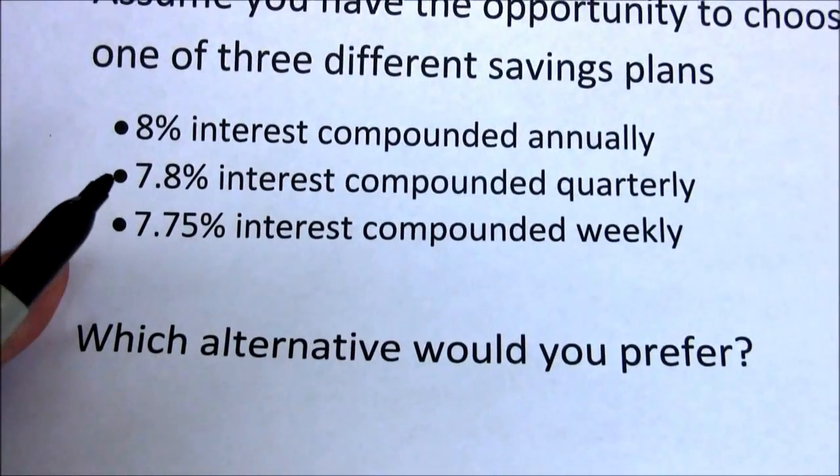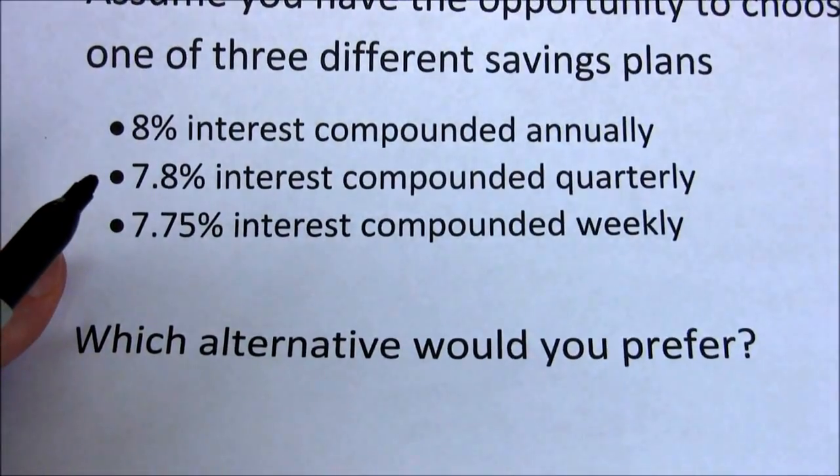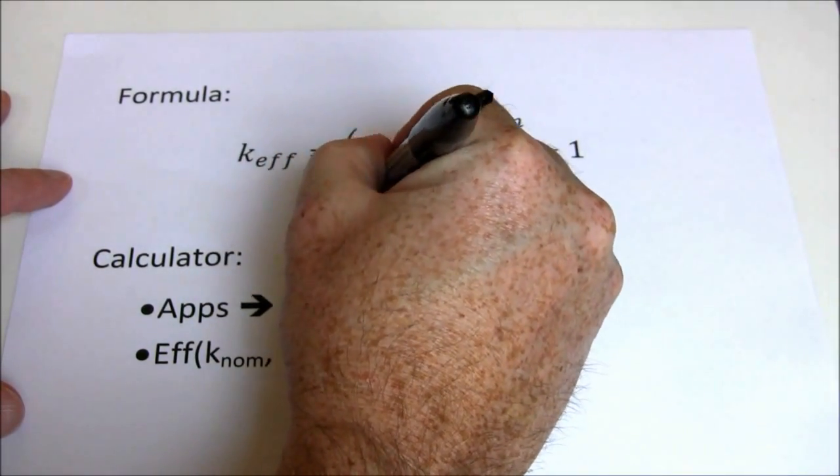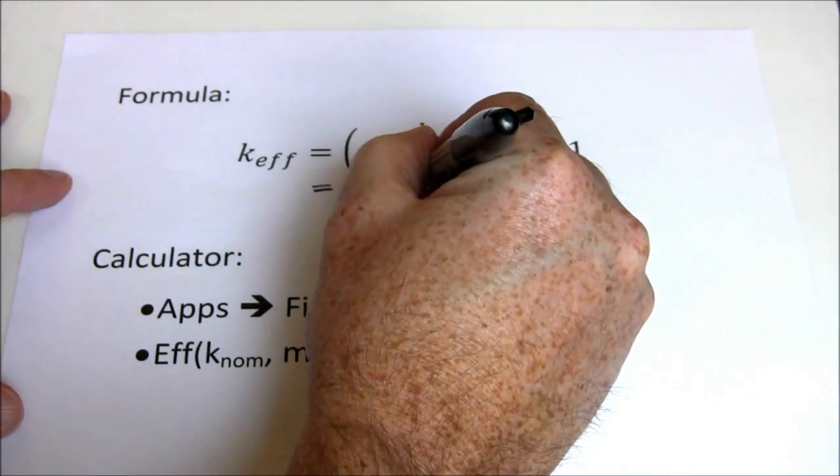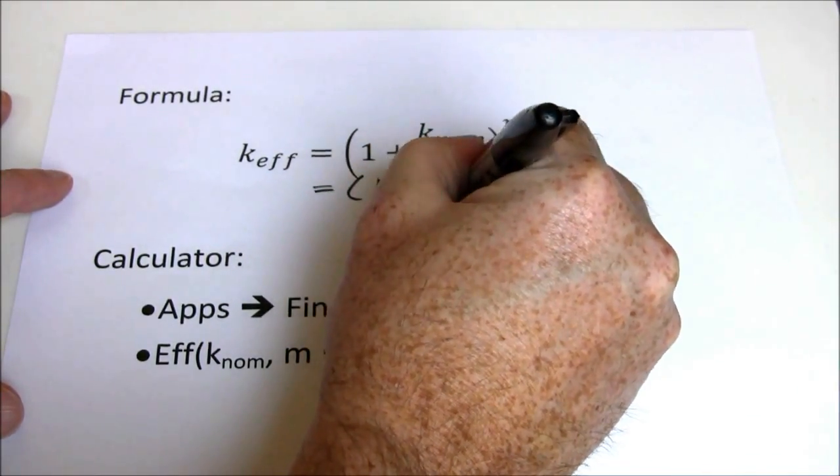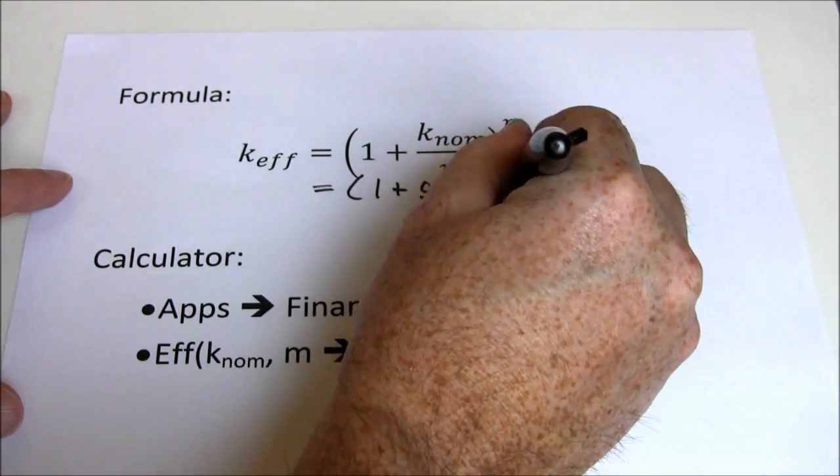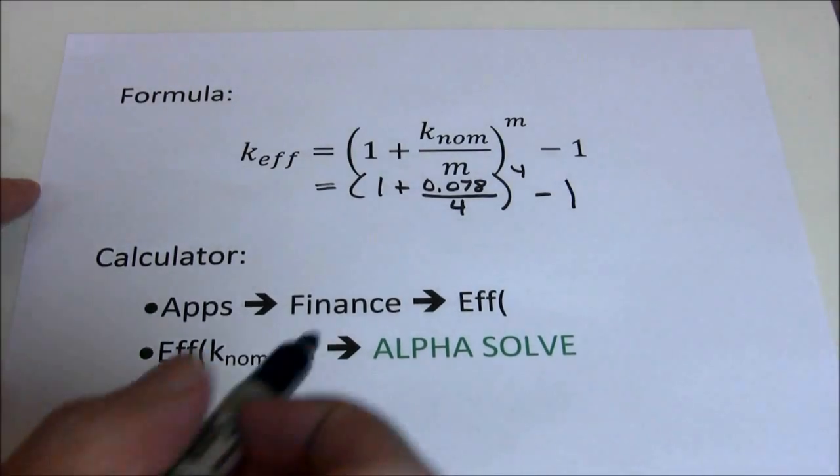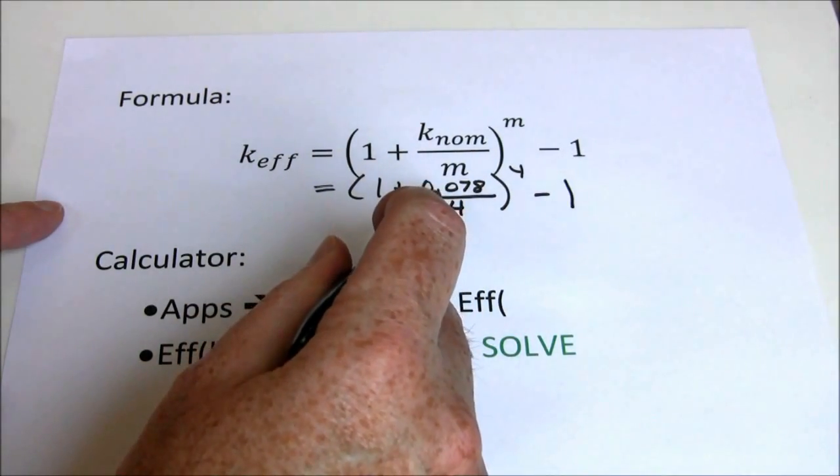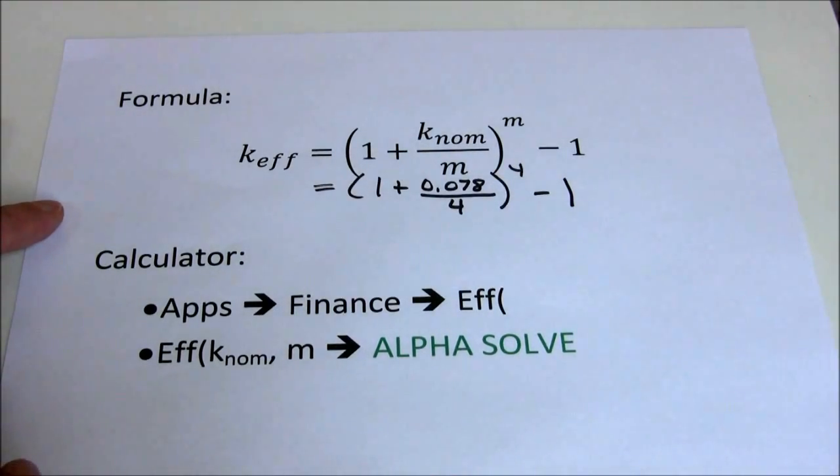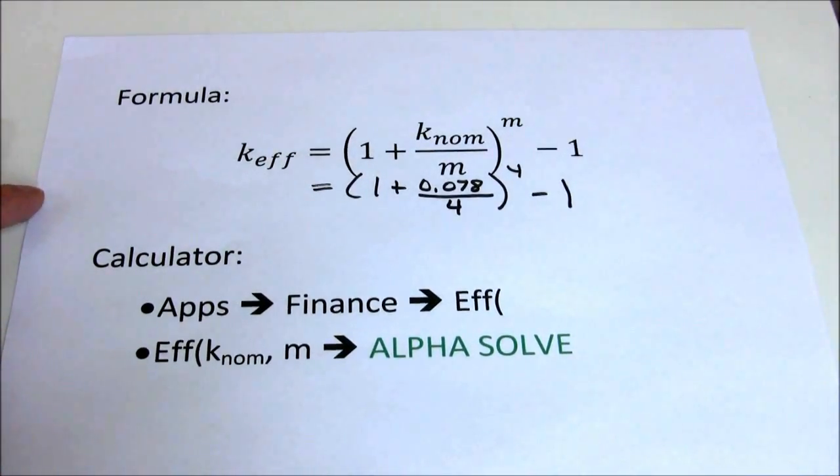Let's go ahead and do the 7.8% interest compounded quarterly. That would equal 1 plus 0.078 divided by 4 raised to the 4 minus 1. A couple of things here. Make sure you plug the nominal rate in as a decimal. Don't plug it in as 7.8. You've got to plug it in as 0.078 in order to get the right answer.